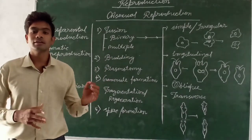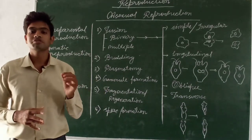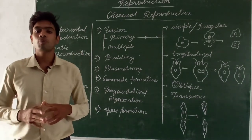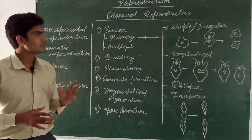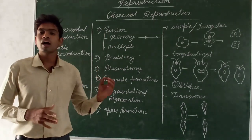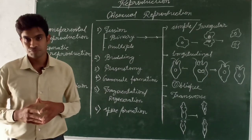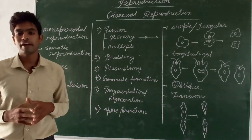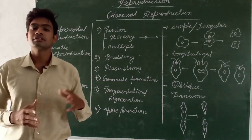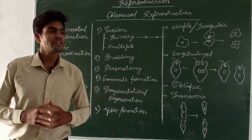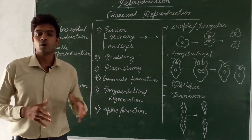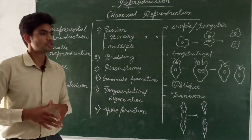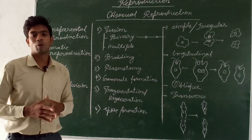Now let's talk about the advantages of asexual reproduction. The first advantage is that the simplest method of cell division — amitotic cell division — occurs. The second advantage is that a large number of young individuals are formed. The third advantage is that it helps in dispersal to far away places, meaning a large area can be covered, supporting rapid population growth.